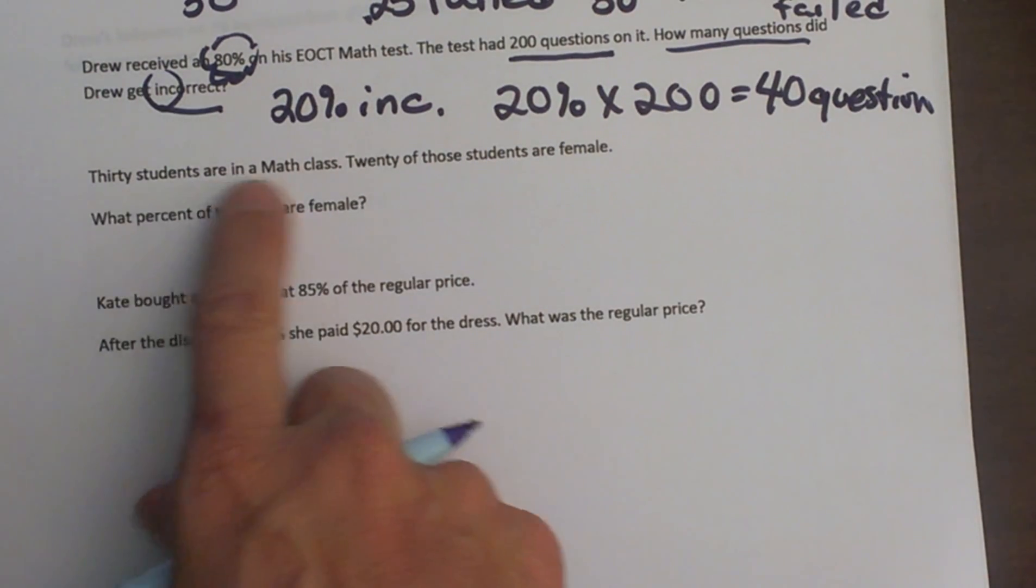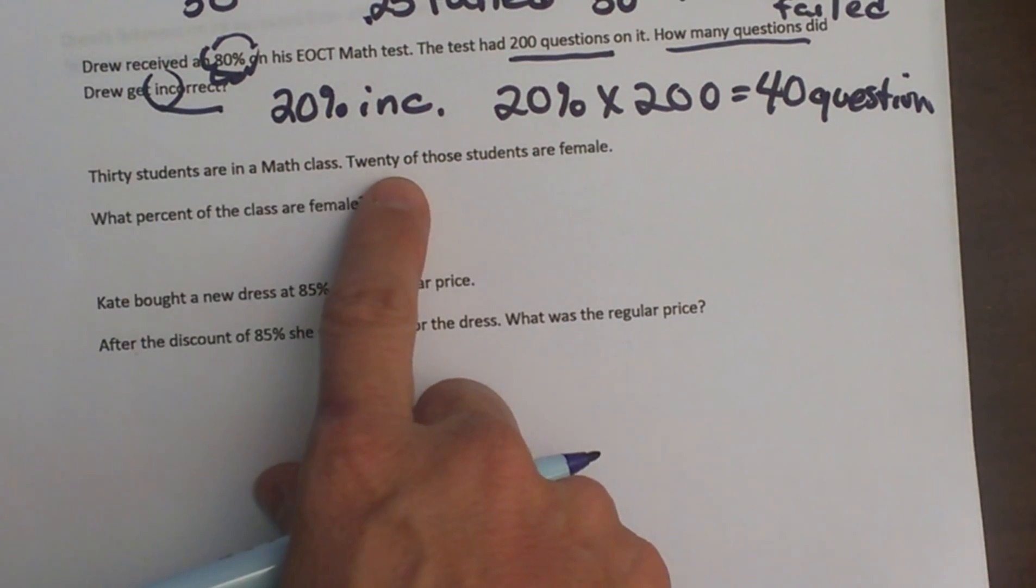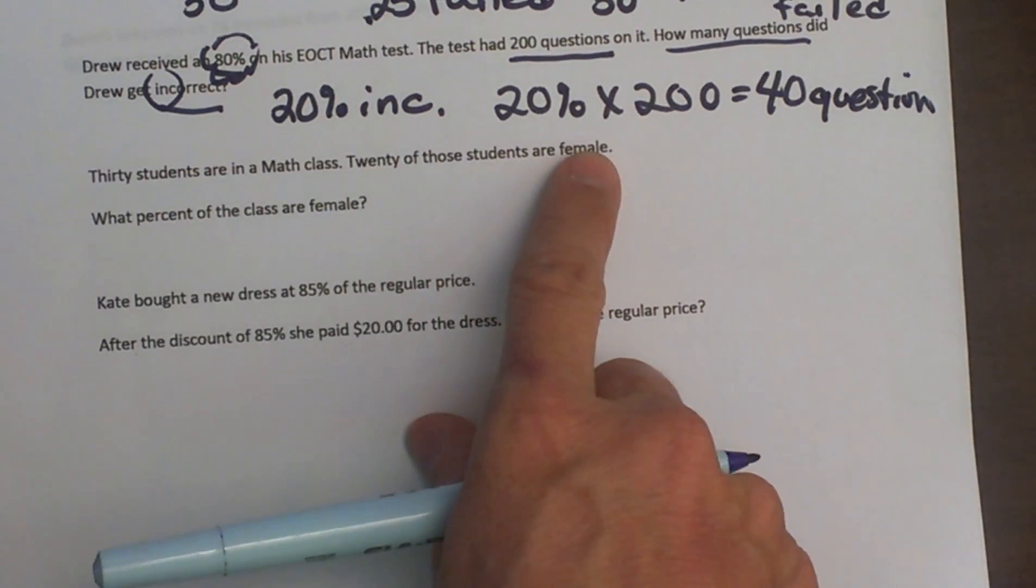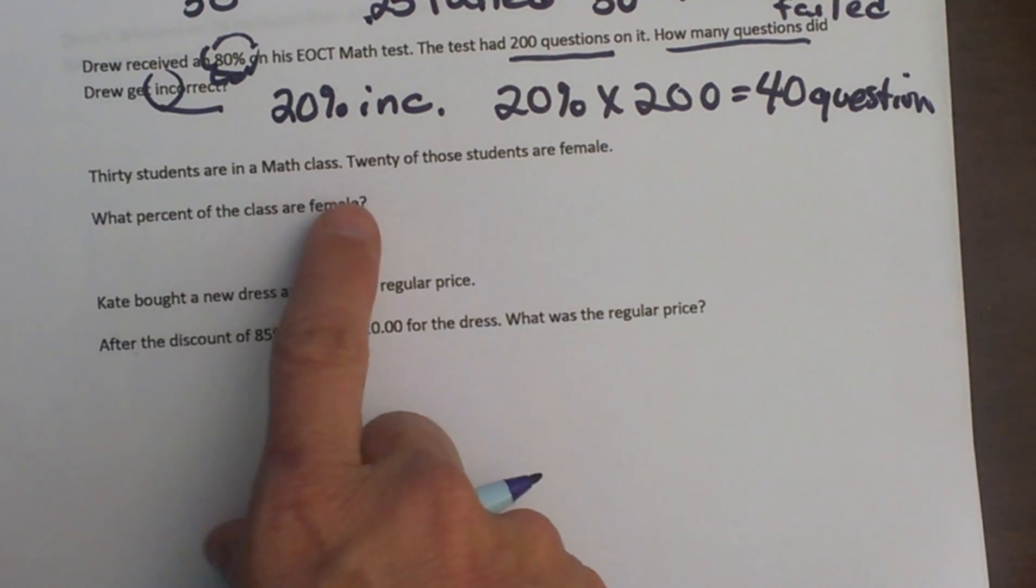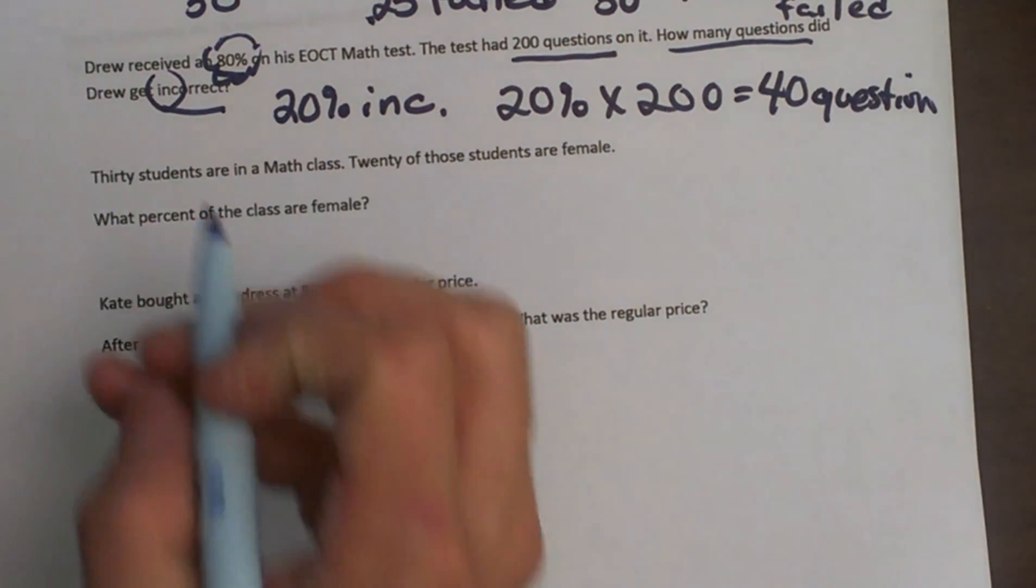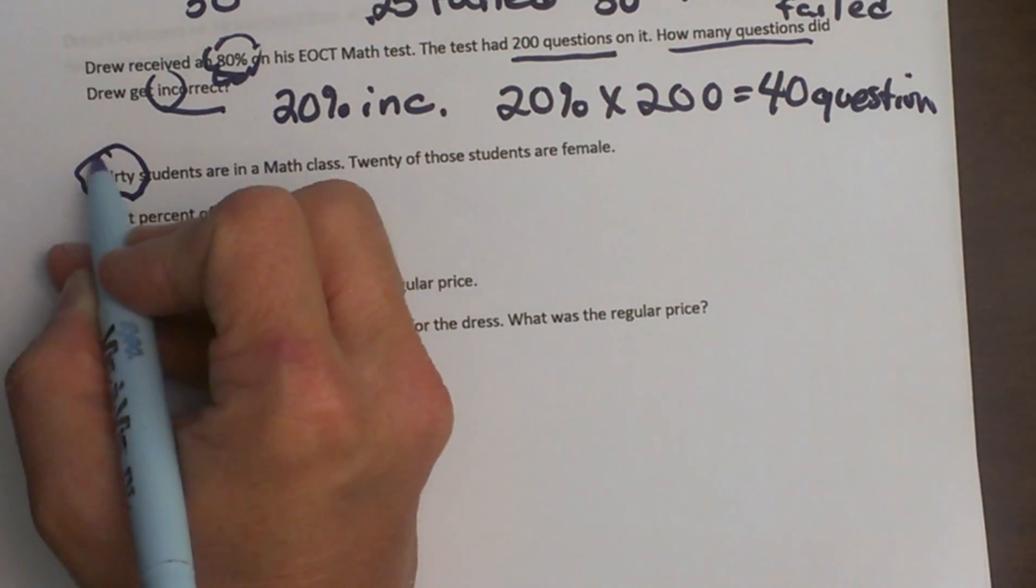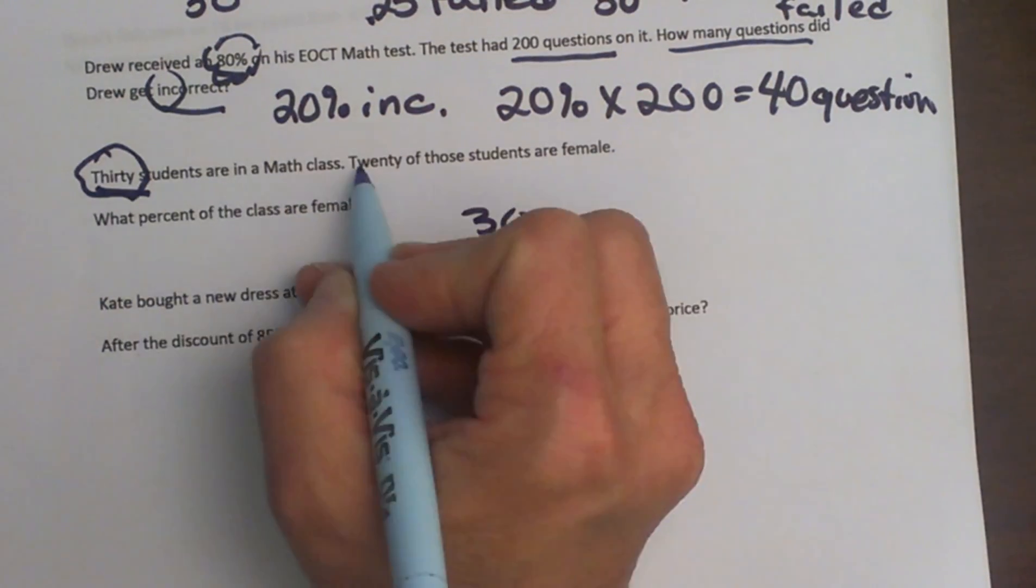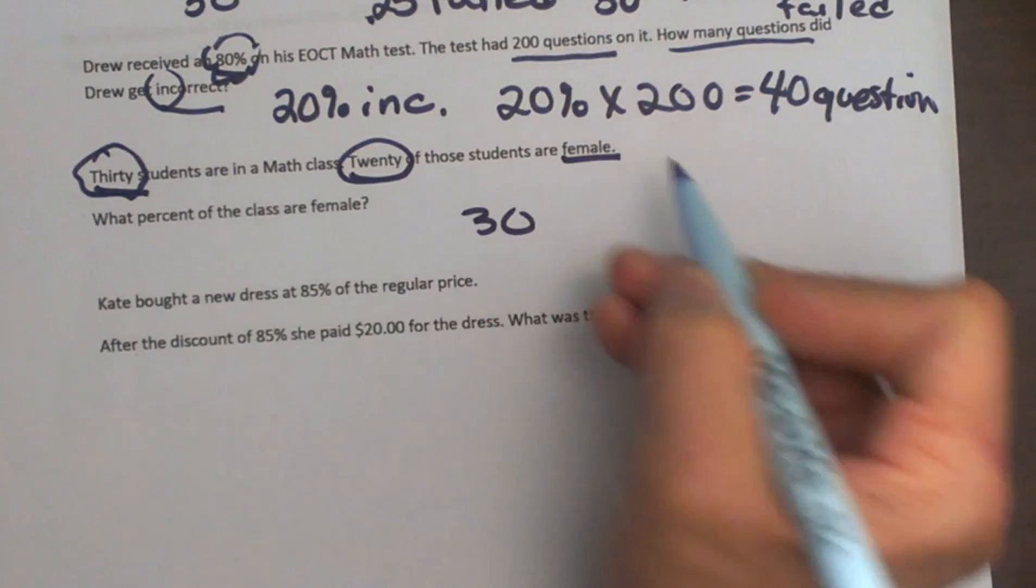Let's look at the next one. 30 students are in a math class. 20 of those students are female. What percent of the class are female? Circle information that we need to know. 30 students, so again we have 30, and 20 are female.